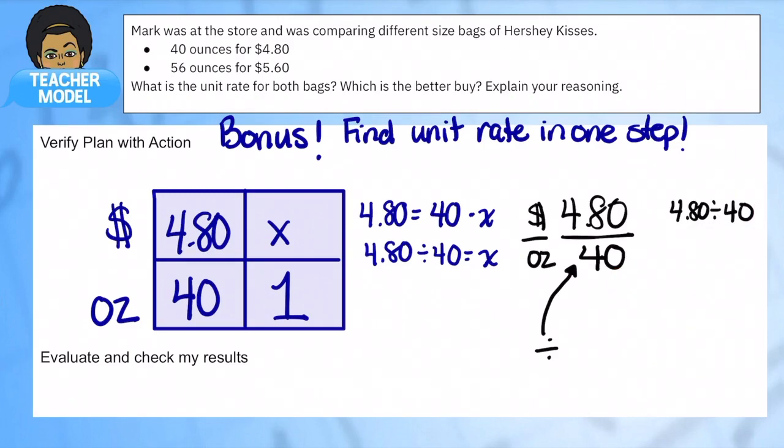This is the same expression we can get if we had just started with the unit rate. This is just another way that you can find unit rate in one step. If you do not feel comfortable with it and you would rather use math because it makes more sense to you, stay with math, stick with it. If you think you're ready to do this in one step, then you can go into this one step.